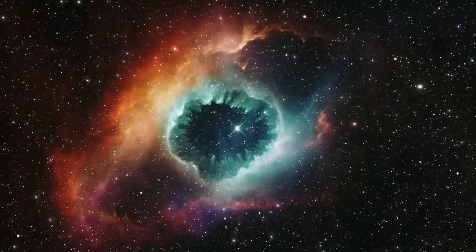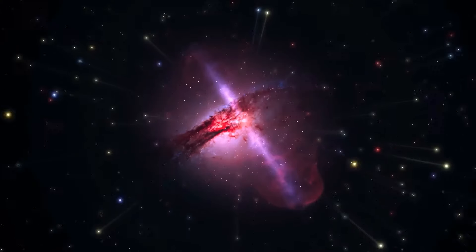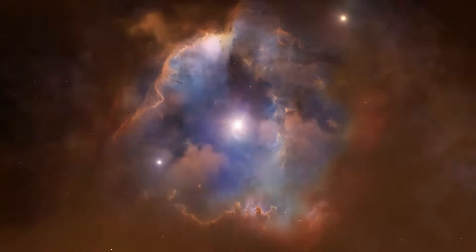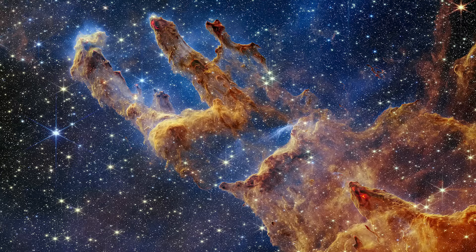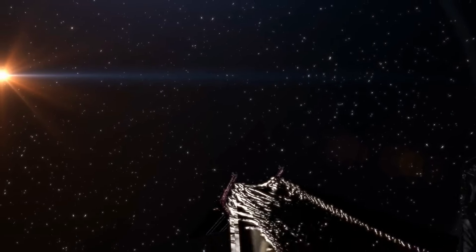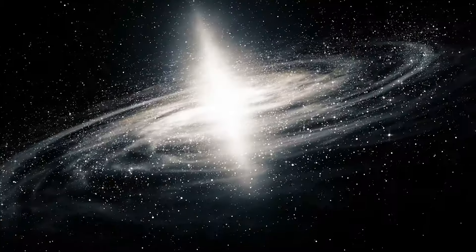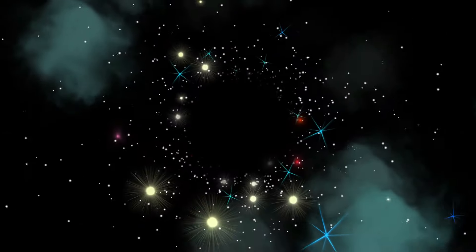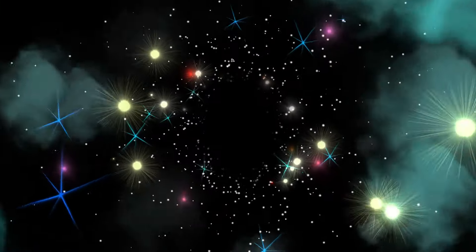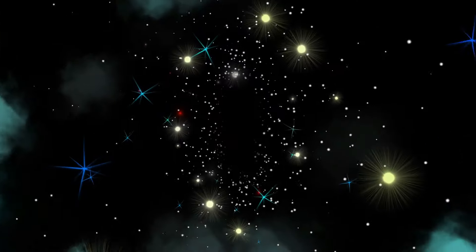With the James Webb Space Telescope soaring through space, our understanding of the universe and its galaxies expands as we search for the light emitted by the first stars and galaxies that emerged after the Big Bang. The JWST serves as a powerful tool in the study of galaxy formation, evolution, as well as the intricacies of star and planet creation. To fully grasp the significance of JWST's orbital position, it is necessary to comprehend the concept of the observable universe.